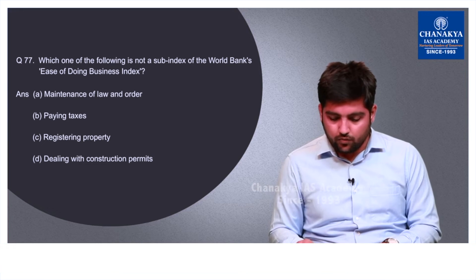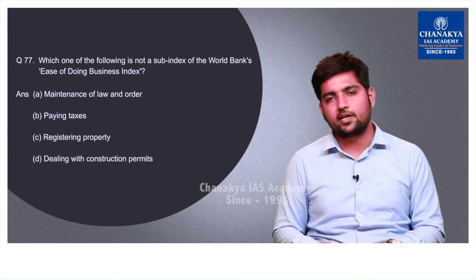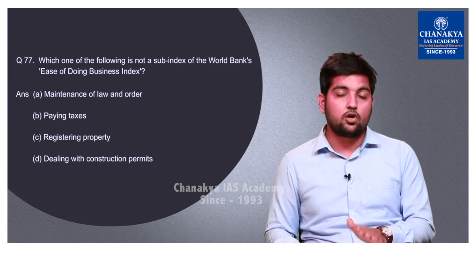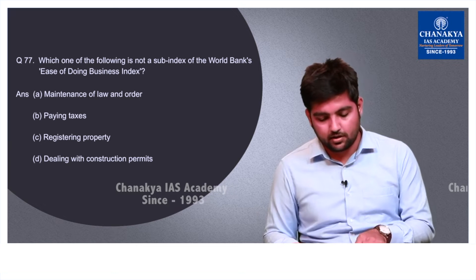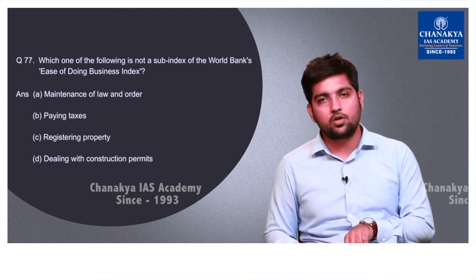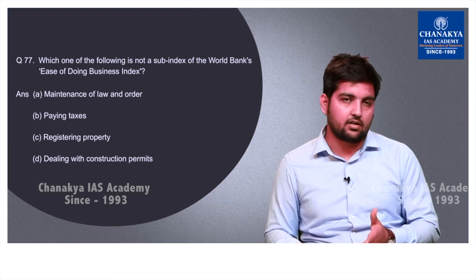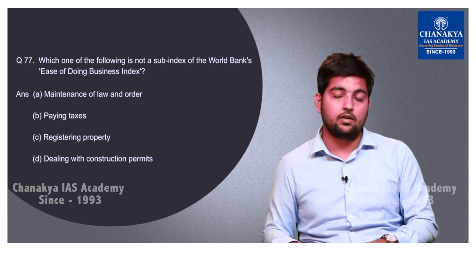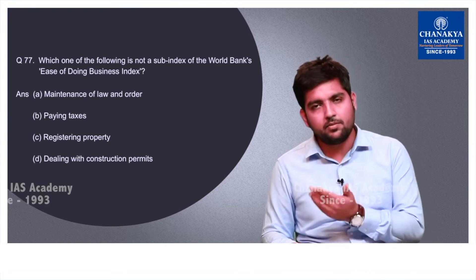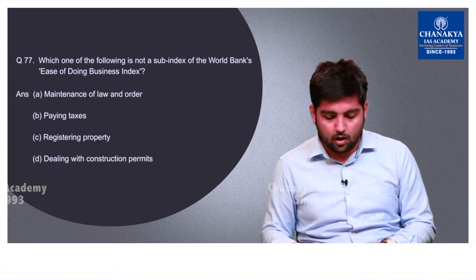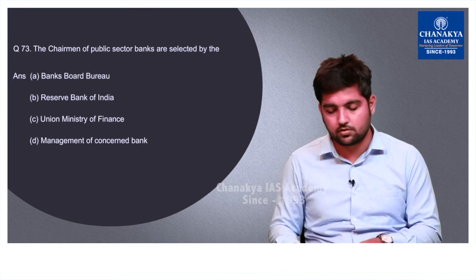Question number 77 asks which is not a sub-index of the World Bank's Ease of Doing Business Index. Using the technique of elimination: paying taxes, registering property, and dealing with construction permits are all important components of ease of doing business, so they cannot be the right answer. By eliminating these three, the correct option is A — maintenance of law and order — which is only indirectly related compared to the other options.